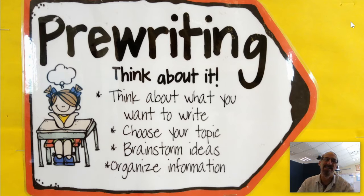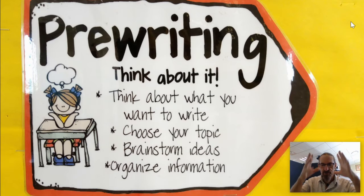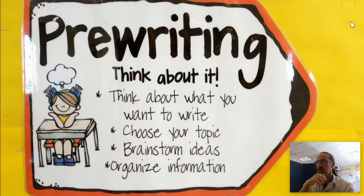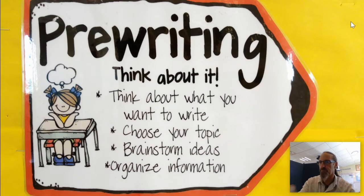The first step is obviously to think of an idea — getting ideas, thinking about what to write. You can use whatever method you want: a brainstorm, some sort of chart with different ideas, a table, or a list to get ideas of what you might want to write about, choosing a topic and organizing information that you might want to put in your writing. That's the first part — all of that is pre-writing.